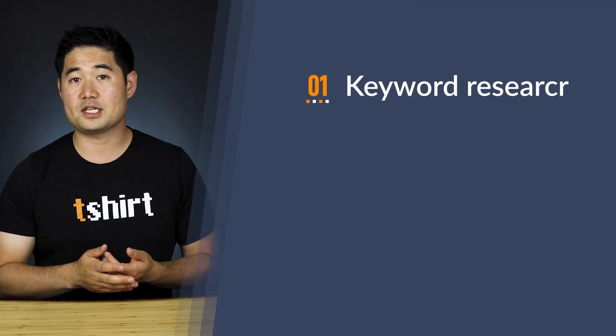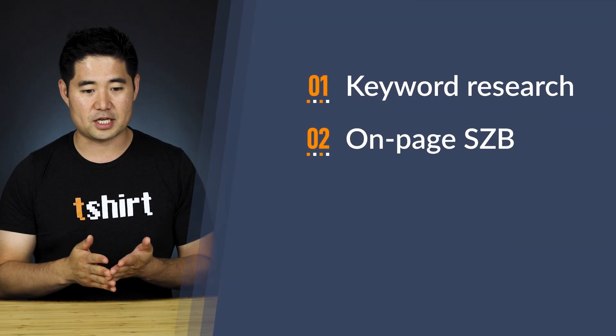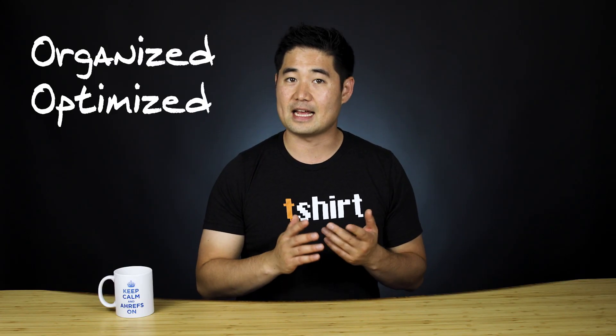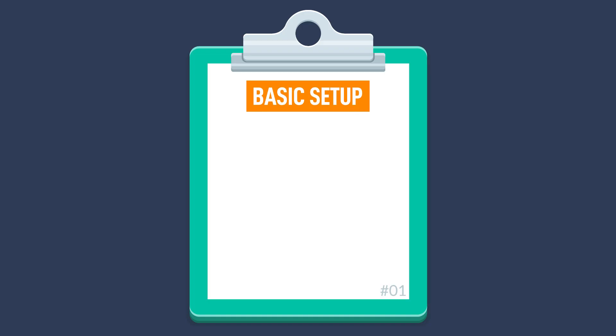As I'm sure you know, there are numerous categories in SEO — from keyword research to on-page SEO, technical SEO, link building, and more. So rather than trying to tackle all of them at once, this SEO checklist is going to help you stay organized, optimized, and sane. With that said, let's jump into the first category of our SEO checklist, and that's the basic setup.